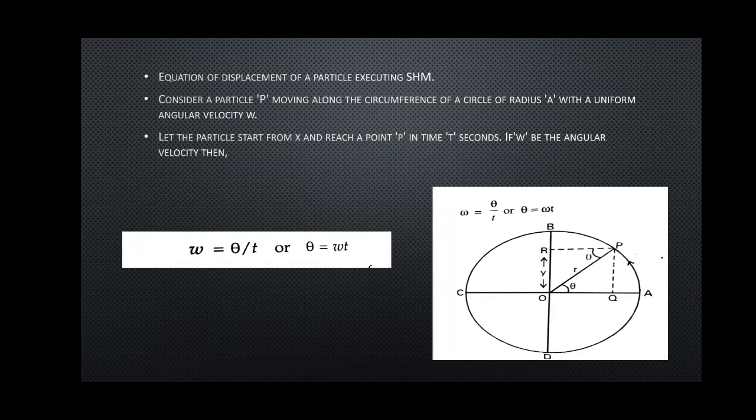For this derivation, first draw the necessary diagram: a circle with two diameters AC and BD. The particle starts at point A and reaches point P after some time, making angle theta at the center — angle AOP — called angular displacement. When the particle moves from A to P, drawing a perpendicular on diameter BD gives straight-line displacement OR, called linear displacement, denoted by Y. Omega (ω) is angular velocity — the rate of change of angular displacement. Theta equals omega times t, which is useful for the derivation.